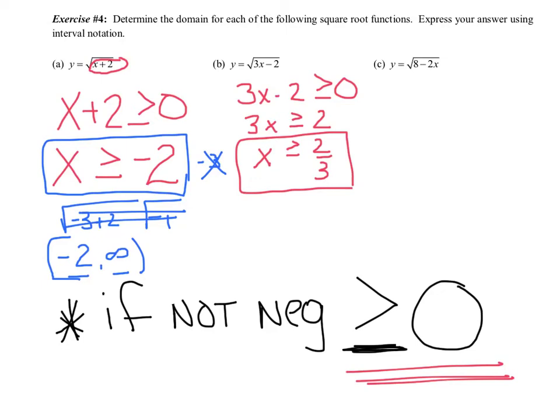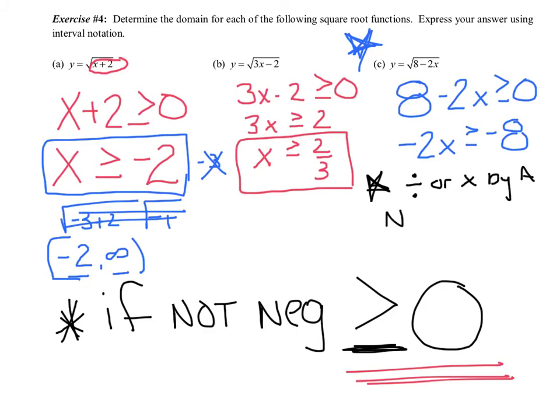Now, here comes a nasty trick. Star C in your notebook. Whatever's under there, just like we said, has to be greater than or equal to 0. Now, watch what happens. I'm going to subtract 8, so I get negative 2x is greater than or equal to negative 8. And here's where the trick comes in. Here's what we're writing in our notebook. If you divide or multiply by a negative, you have to flip the sign.